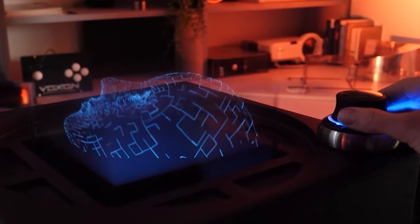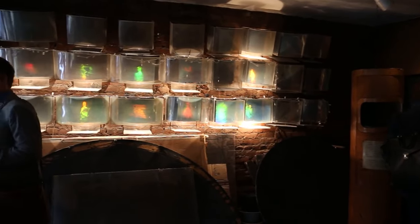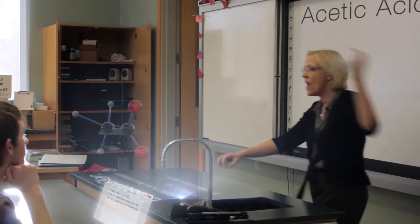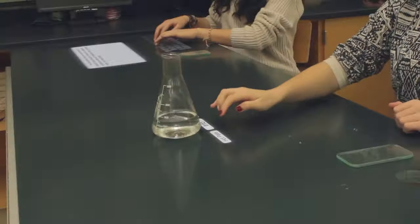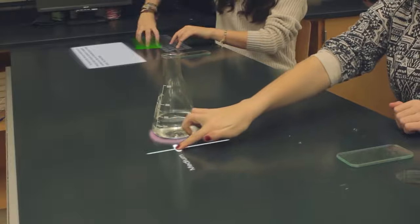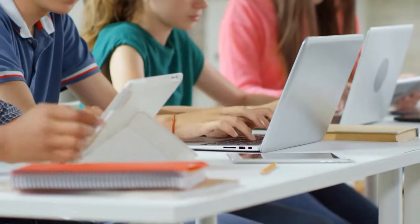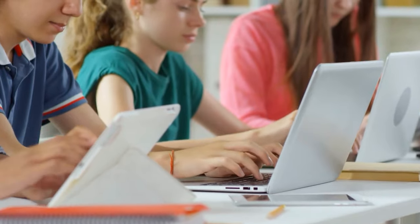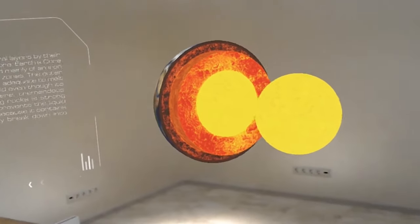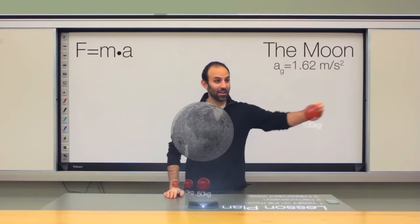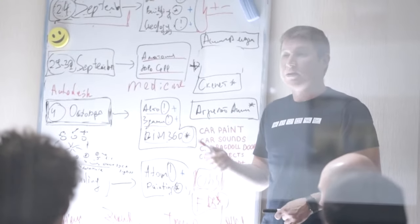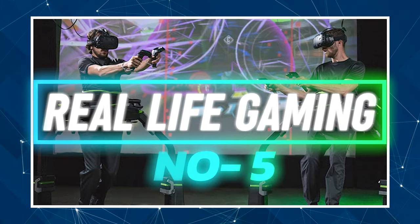Number four: new-age classrooms. Education is one of the biggest fields to be disrupted by holograms. Students would be able to study anything with a visual representation — for instance, studying human anatomy as a hologram, seeing how everything is built and how surfaces work in great detail, something that's just not possible with 2D surfaces like books and computers. Another benefit is that holograms are insanely immersive, so students would pay attention instead of getting bored and dozing off.